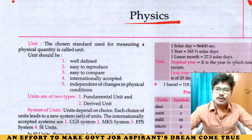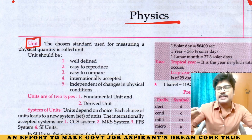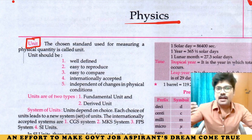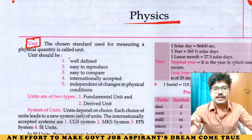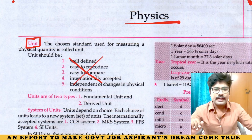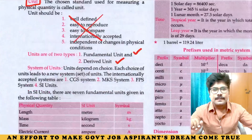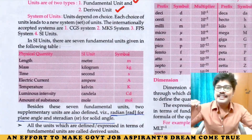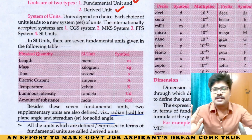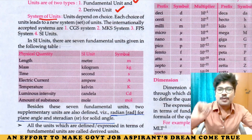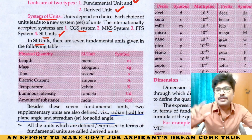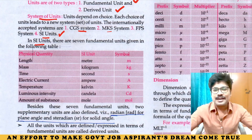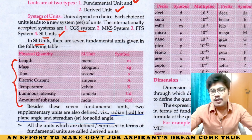First, to study physics laws, to tell anything, measurements are needed. For measurements, you need to have some unit. There are two types of units: fundamental unit and derived unit. This one you need to remember. And grouping these units together gives us the system of units. Systems of units are four: CGS, MKS, FPS and SI unit. The most widely used is SI unit. In SI units there are seven fundamental units.